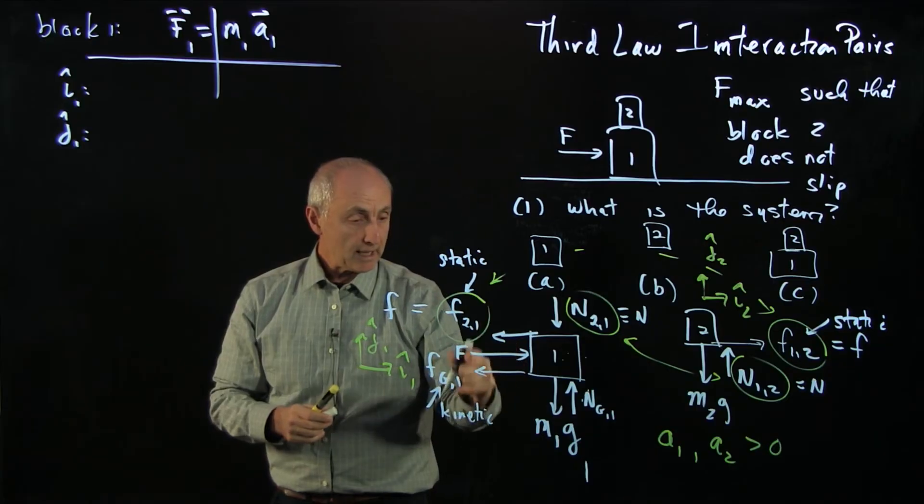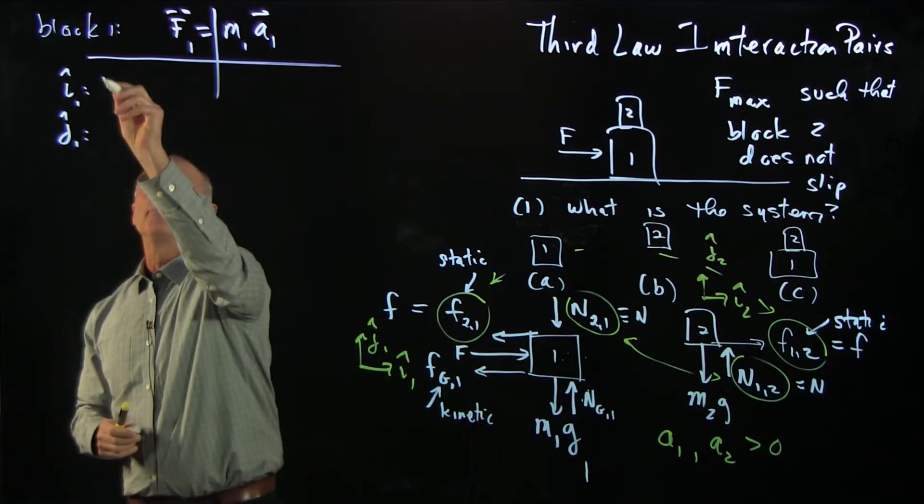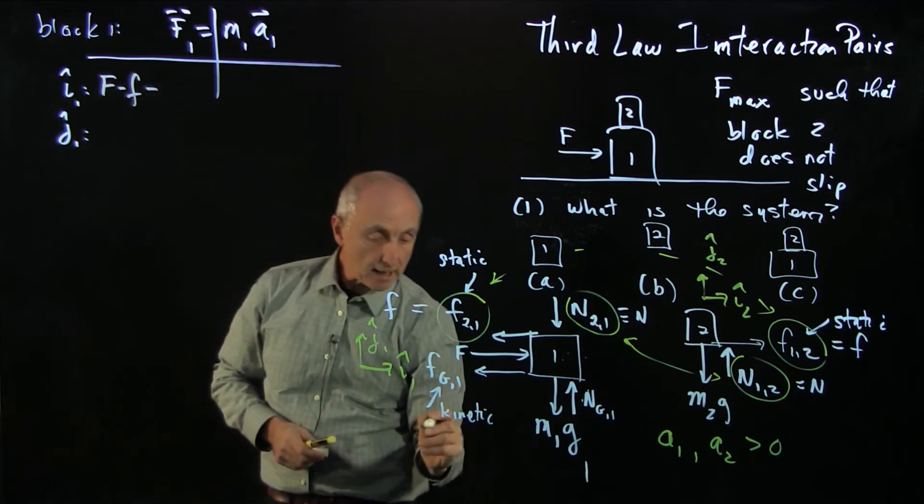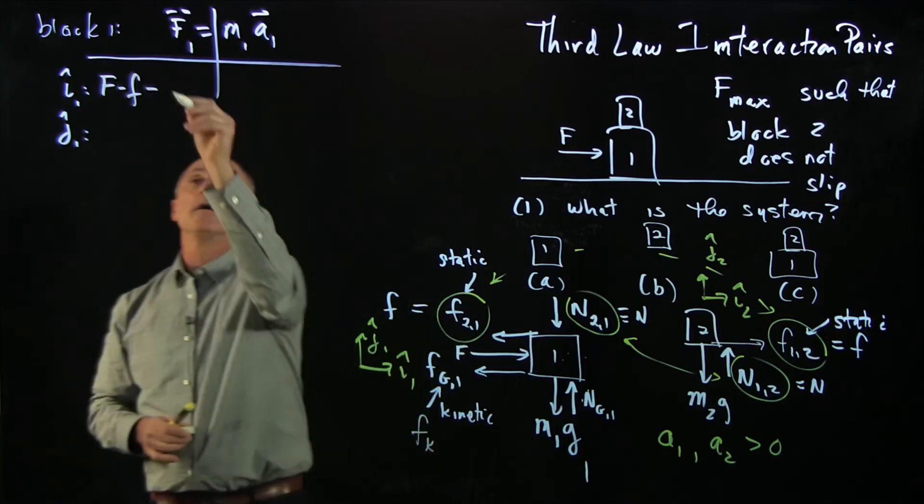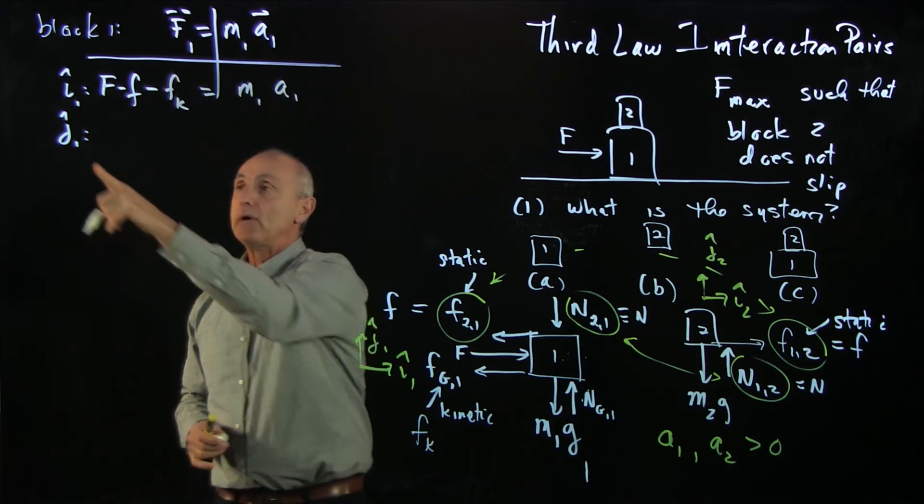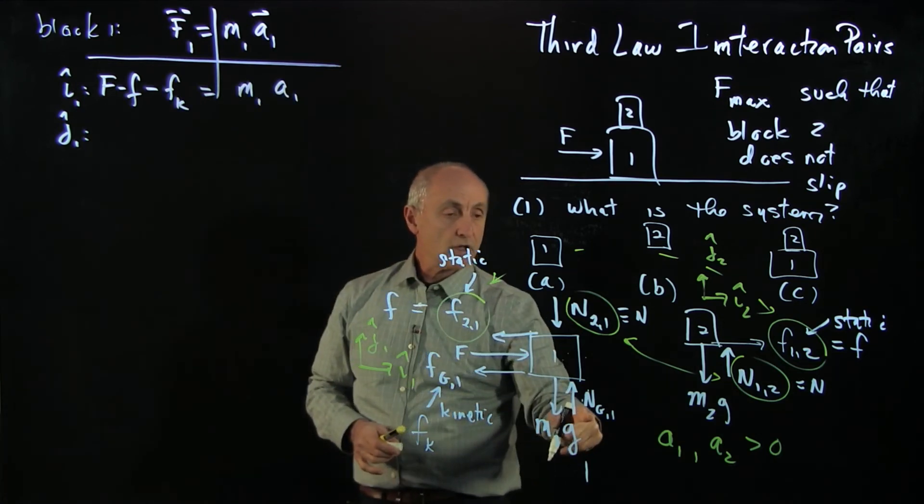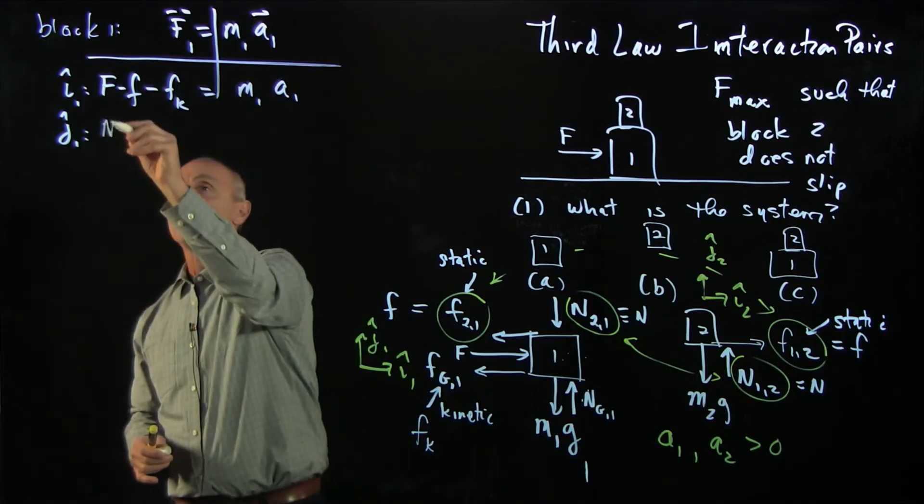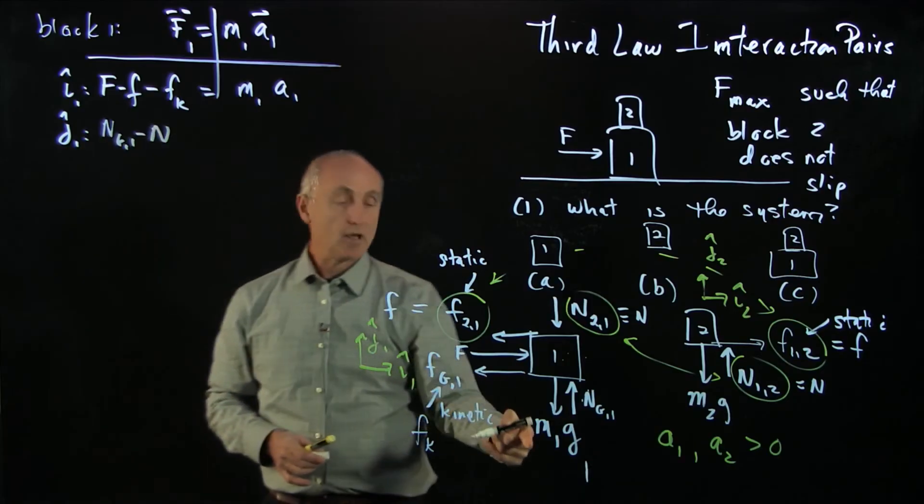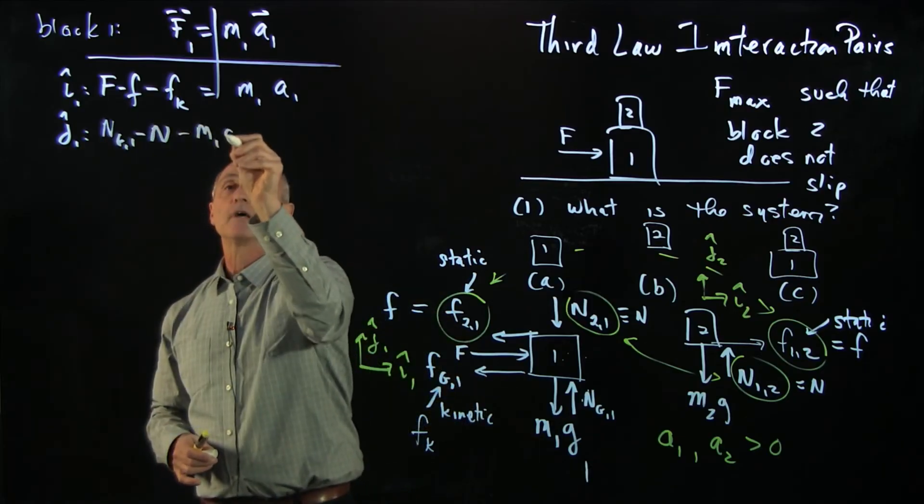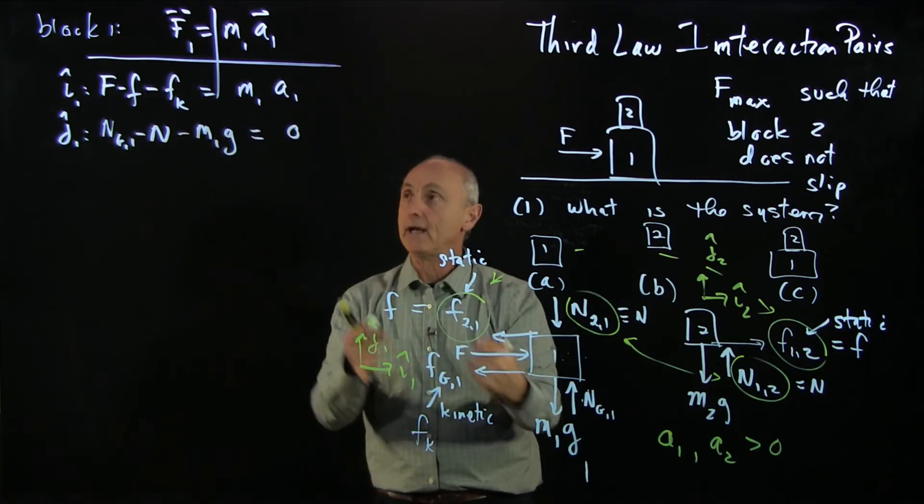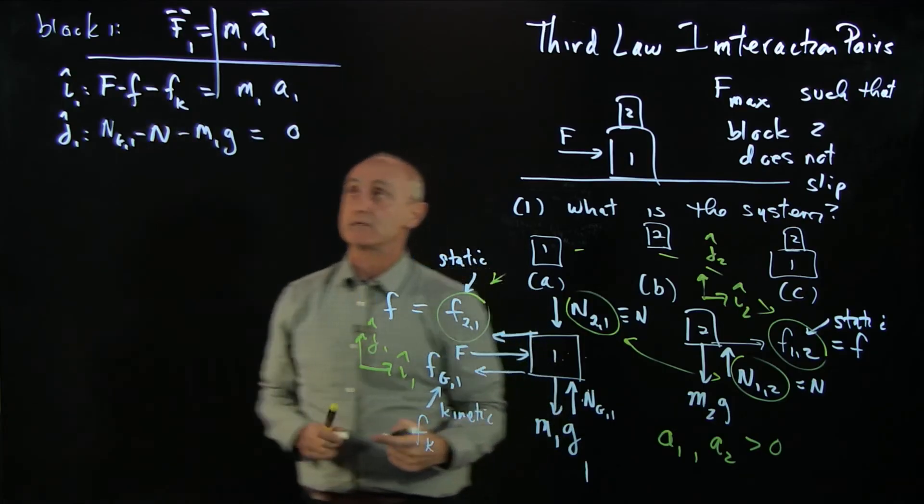So now, in the x direction, we have the pushing force minus the static friction minus the kinetic friction. And that's equal to m1 a1. Now, in the vertical direction, we have the ground friction and ground one minus block two pushing down on block one, minus the gravitational force, and there is no acceleration in that direction. And I double check my free body diagrams. I check my signs. And that looks right to me.